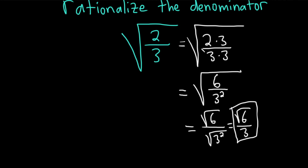So again, we multiplied by 3 over 3. Let me show you an extra step. You could do this and then say times 3 over 3, and that's going to be √6 over √(3²).